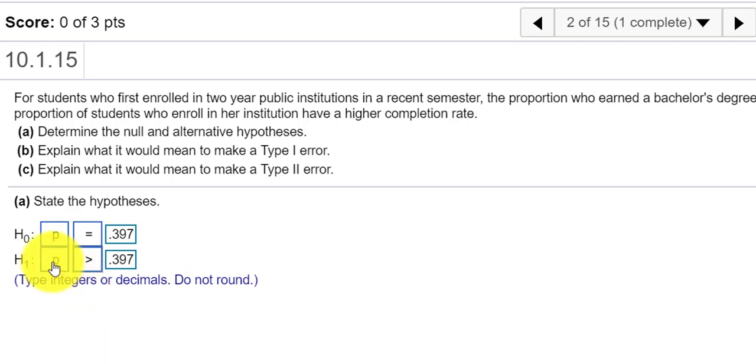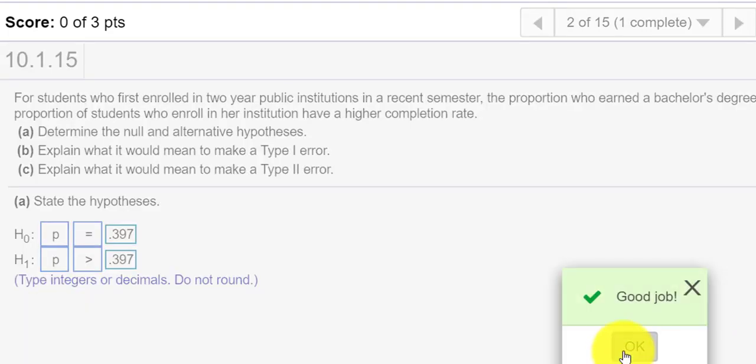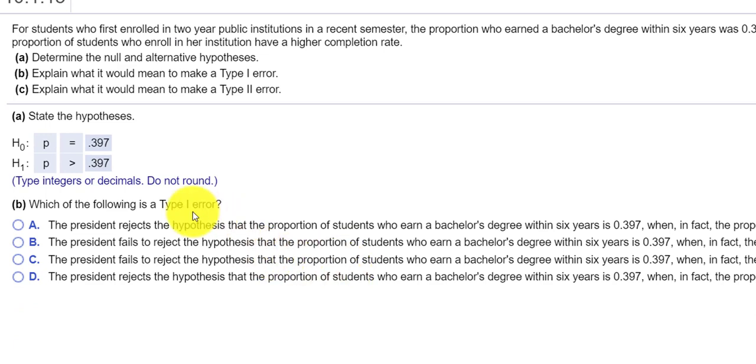But we want to test to see if the proportion is greater. It says a higher completion rate. So that's my hypothesis. Let's check our answer. Good job. And now they want us to interpret this. What's a type 1 error?